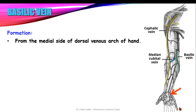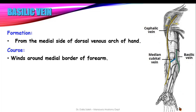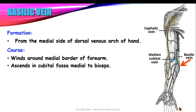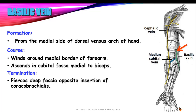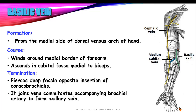The basilic vein is formed from the medial side of the dorsal venous arch of the hand. It winds around the medial border of the forearm and ascends in the cubital fossa medial to the biceps. In the cubital fossa it communicates with the cephalic vein via the median cubital vein. It then pierces the deep fascia opposite the insertion of the coracobrachialis muscle and terminates by joining the venae comitantes of the brachial artery to form the axillary vein. The median cubital vein is a short vein communicating the cephalic and basilic veins, lies superficial to the bicipital aponeurosis, and is a common site for IV injection.